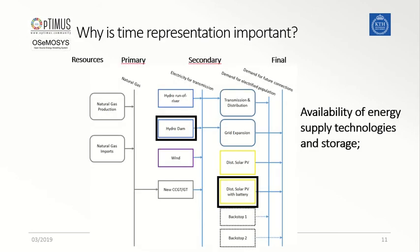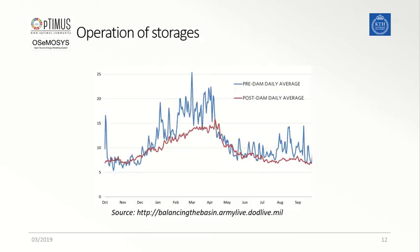If we move our focus to the supply side, we can also notice how some supply technologies can present variabilities in the way they generate electricity. An example can be the hydropower dam. The supply curve of a hydropower dam, shown in red within the graph, might change depending on the availability of water that is linked to the water level in the dam.